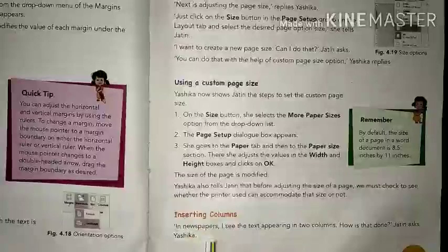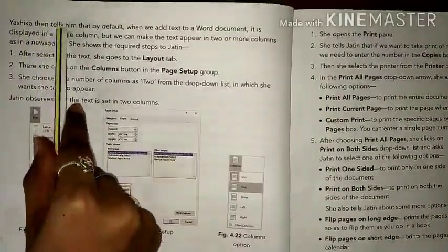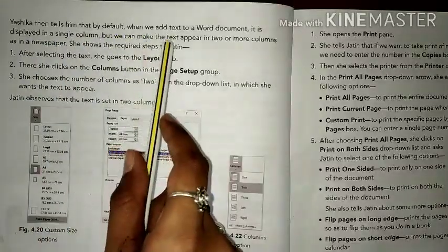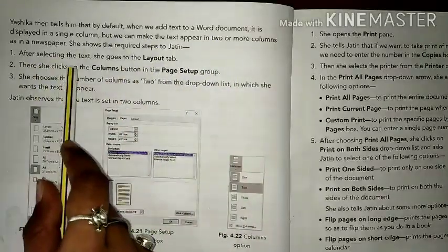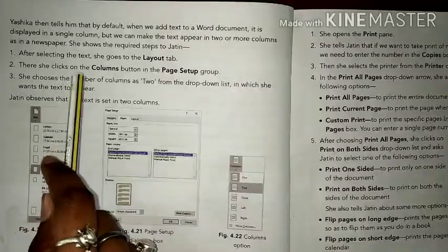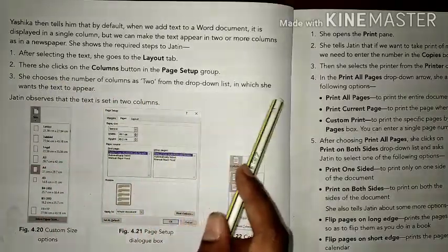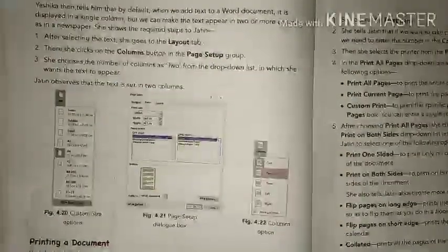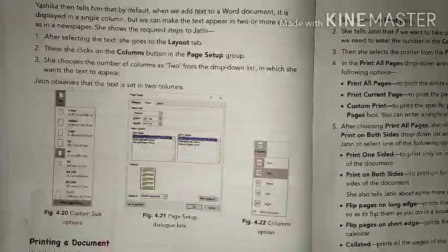Inserting Columns: Jatin asks how text appears in two columns as in newspapers. Yashika explains that by default text is displayed in a single column, but we can make text appear in two or more columns. After selecting the text, go to the Layout tab, click the Columns button in the Page Setup group, and choose the number of columns from the drop-down list. Jatin observes that the text is set in two columns.